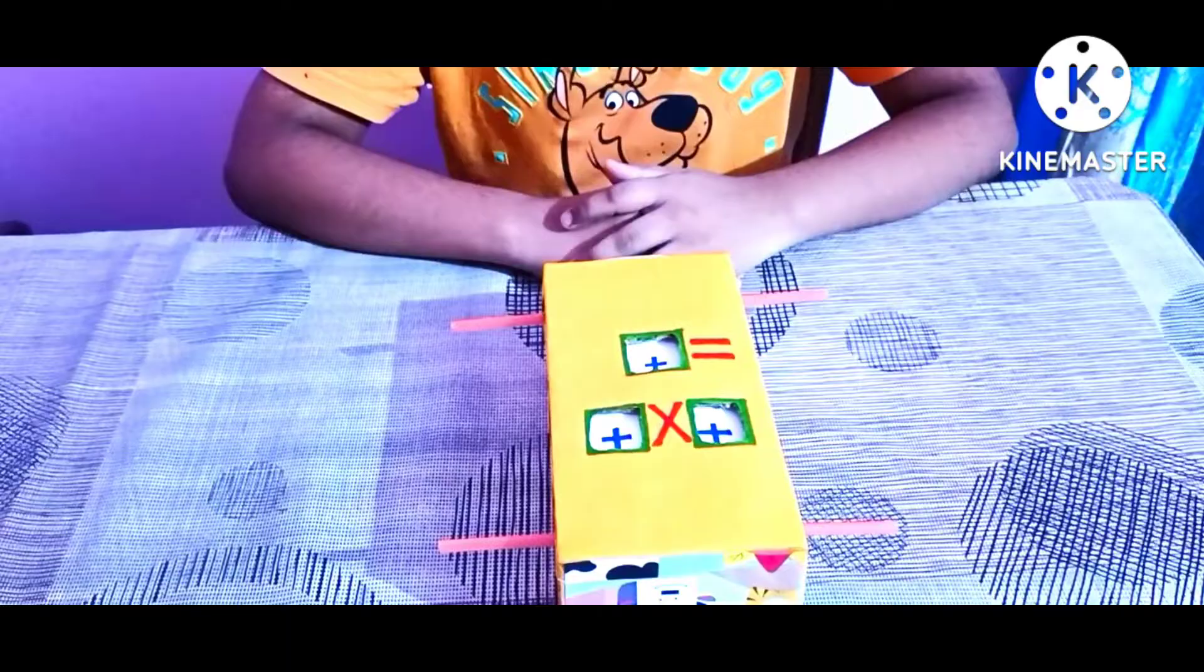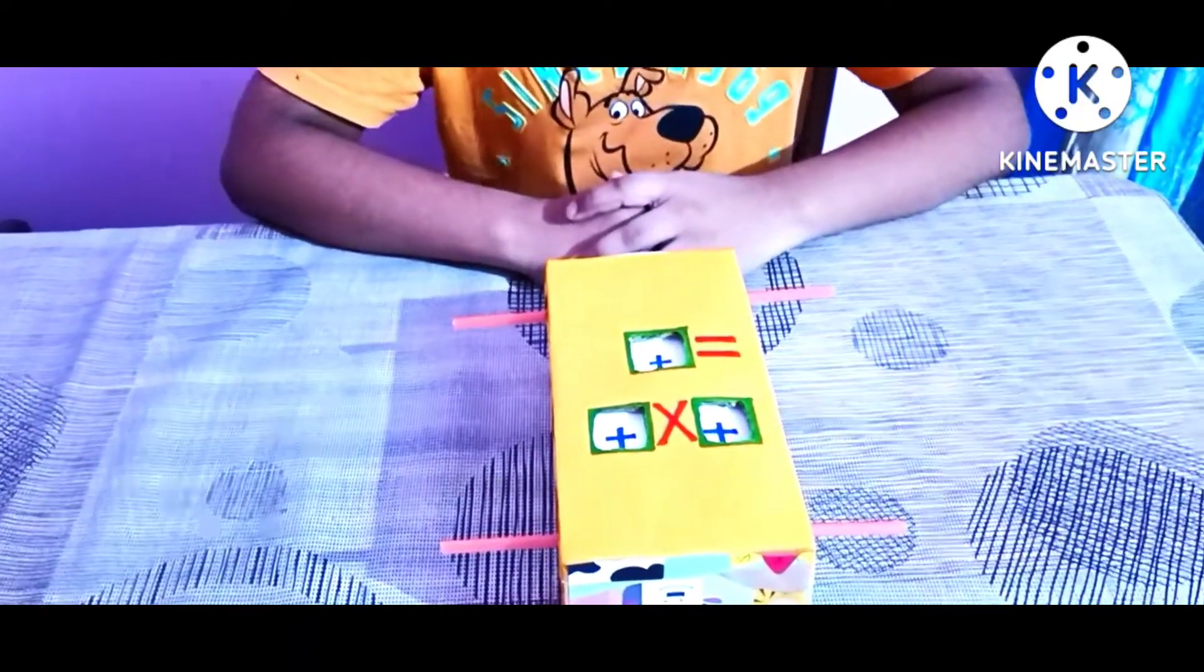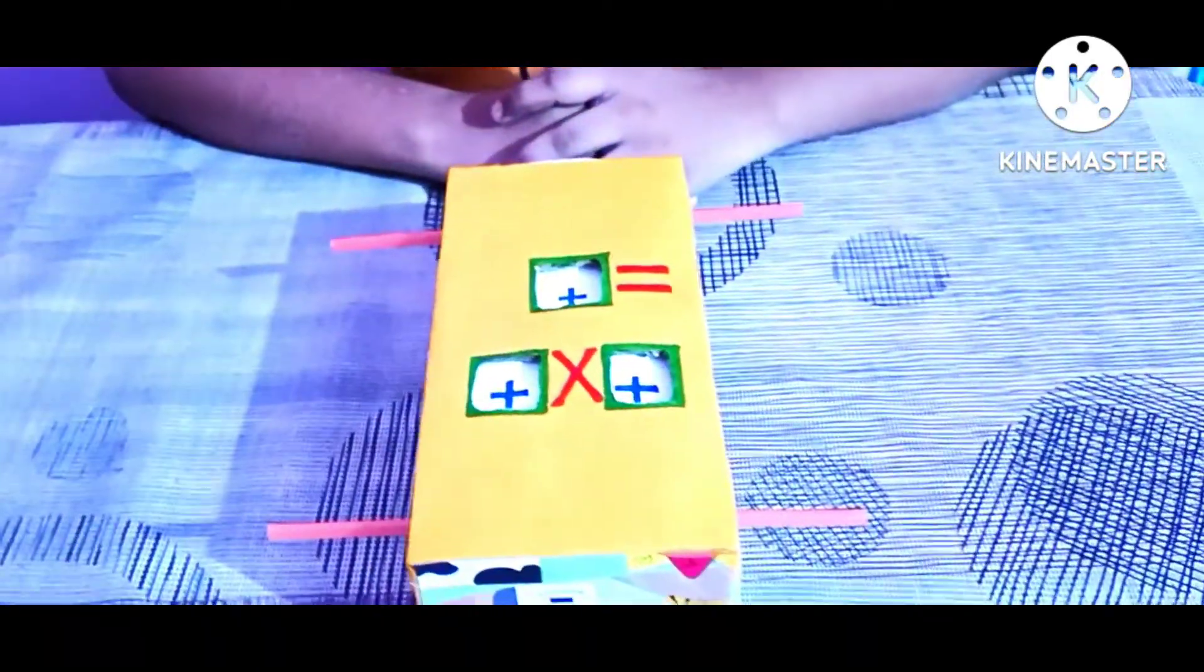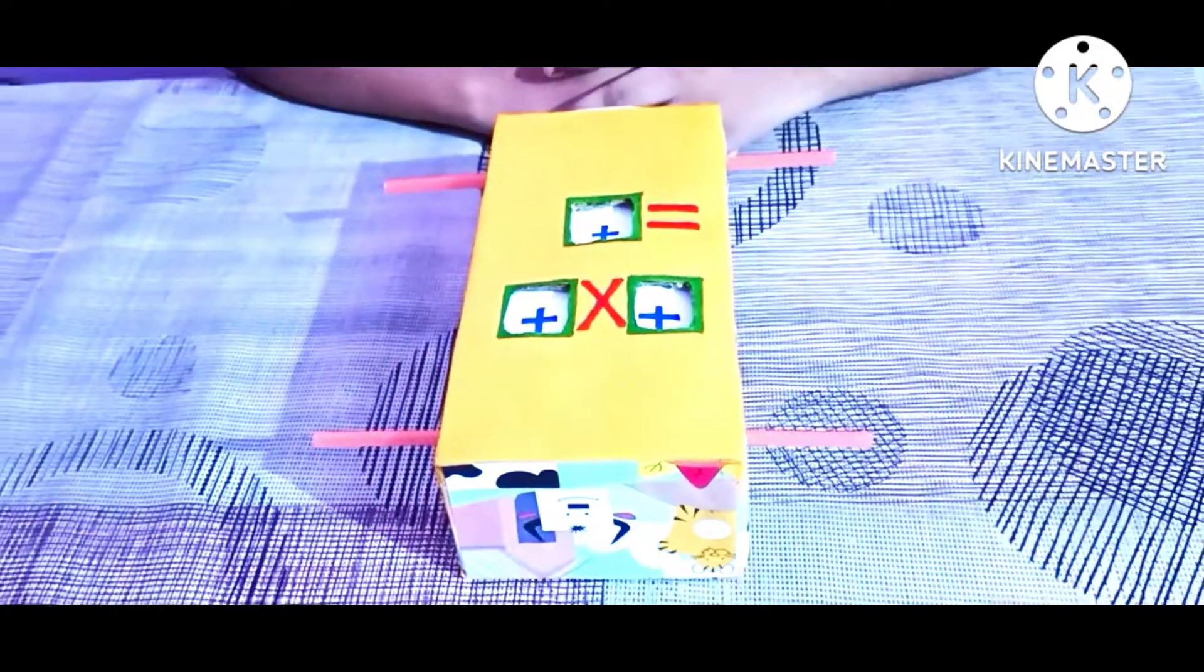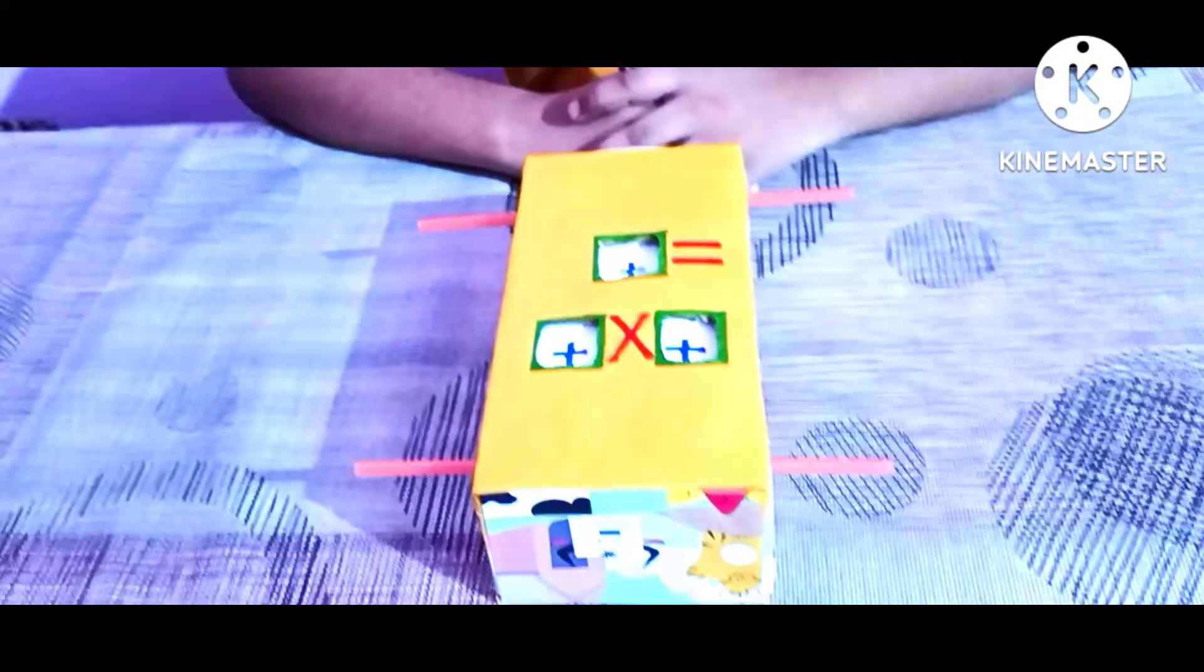After that, we will cut all of these holes with a scissor, and then we will put straws on the circular holes.